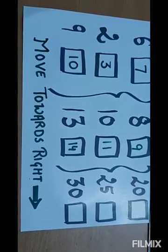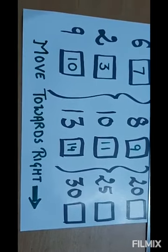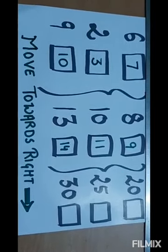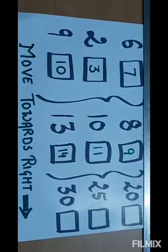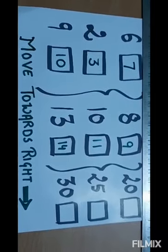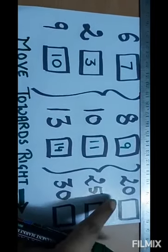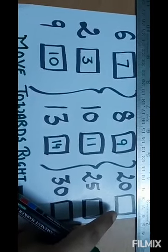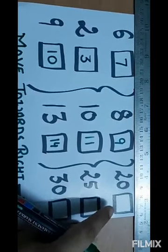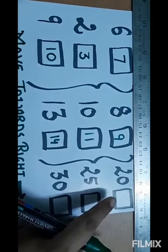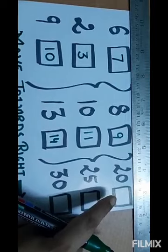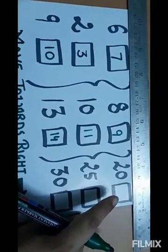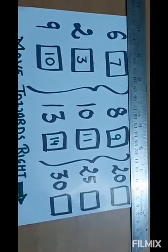Now we have some bigger numbers, so we should not start counting from one — we don't want to waste time, and you all know counting. We see twenty — what comes after twenty? Twenty-one! Yes, you are right, twenty-one.